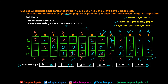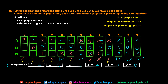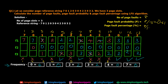That completes the numerical using the LFU page replacement algorithm. The total number of page faults is 8. For page fault probability, we divide page faults by total steps: 8 / 13 = 0.61. For page fault percentage, we multiply by 100: (8 / 13) × 100 = 61%.